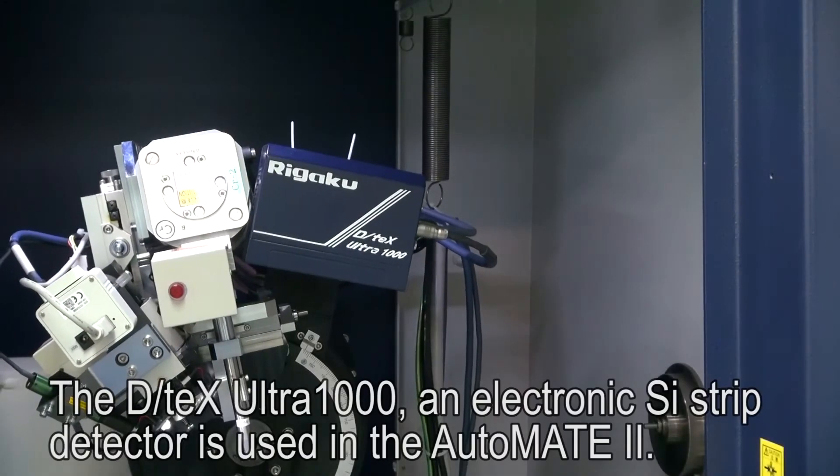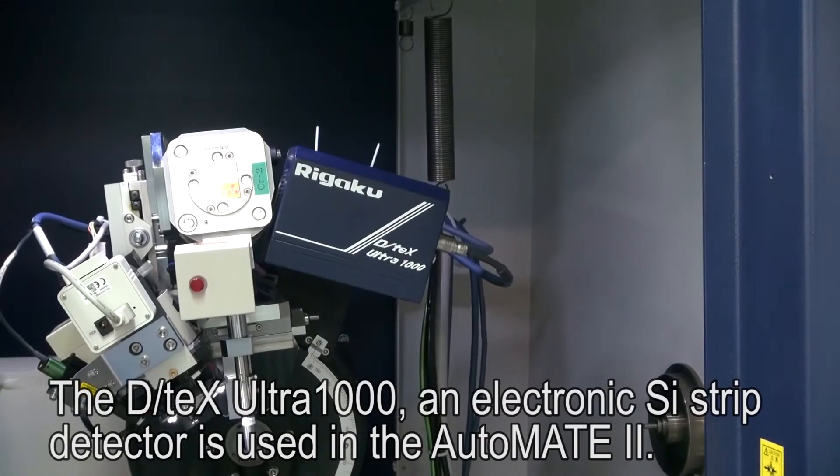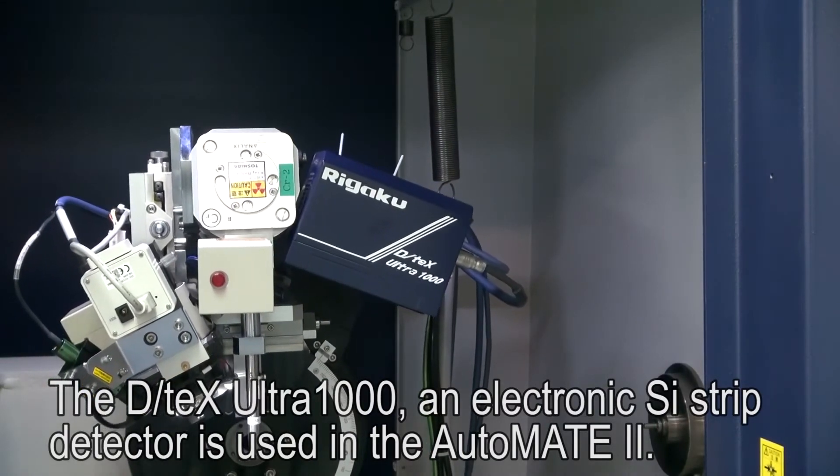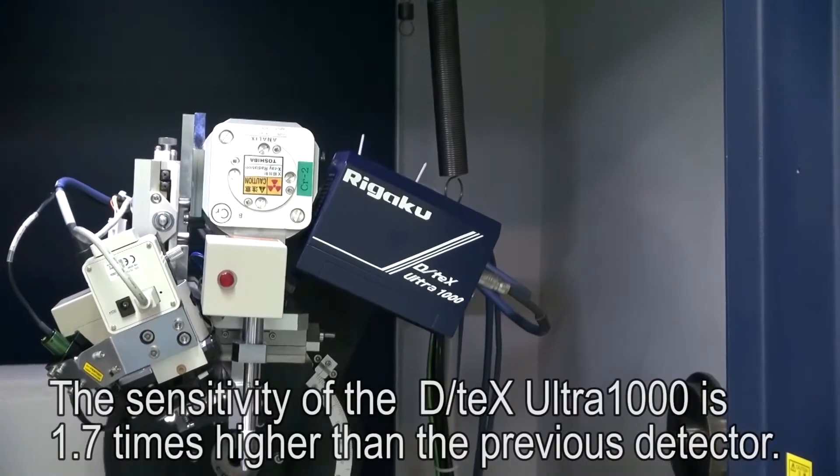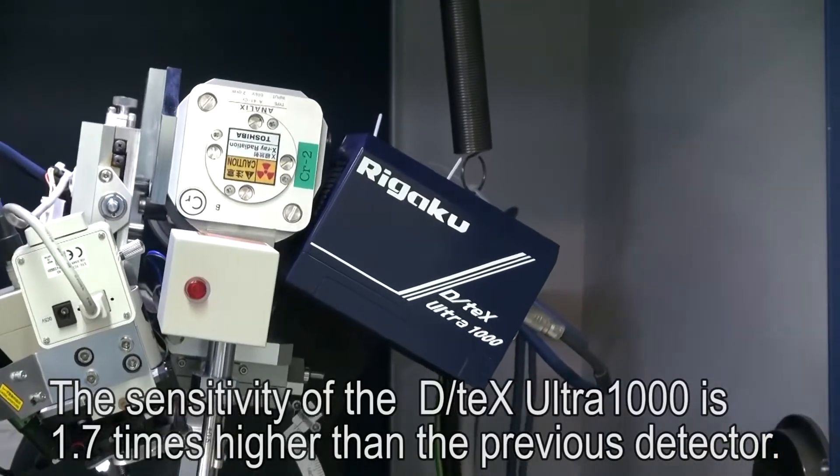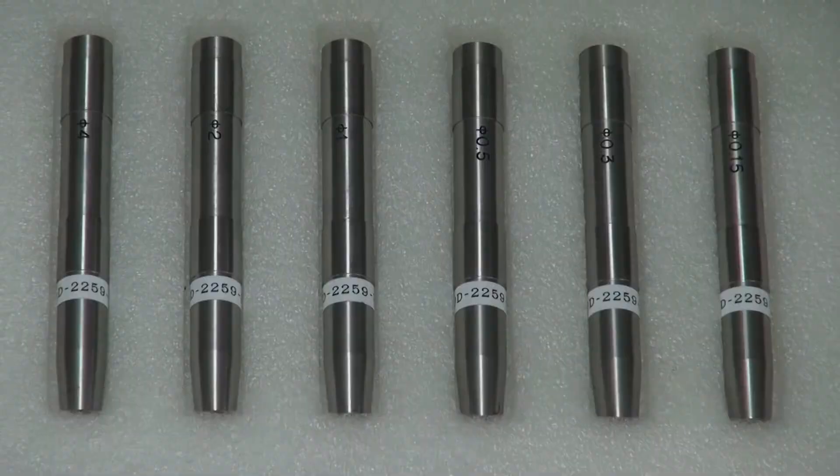The DTEX Ultra 1000, an electronic silicon strip detector, is used in the Automate II. The sensitivity of the DTEX Ultra 1000 is 1.7 times higher than the previous detector.